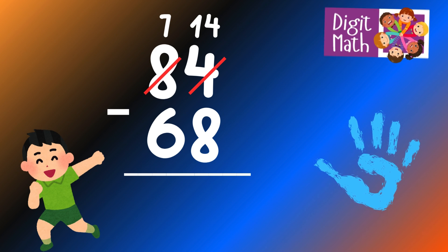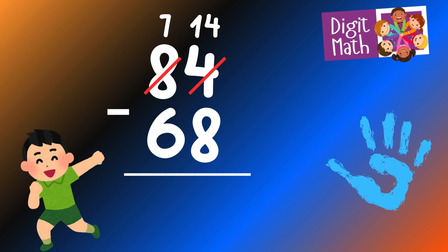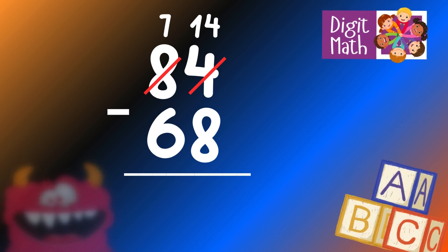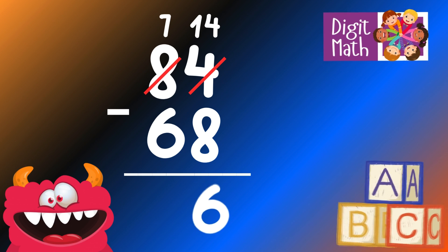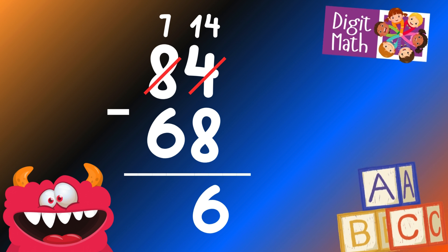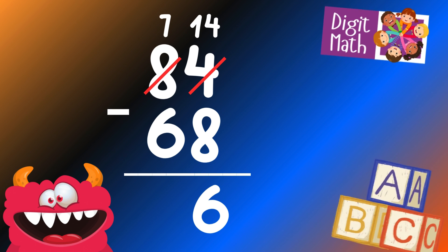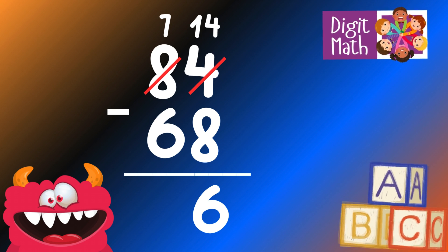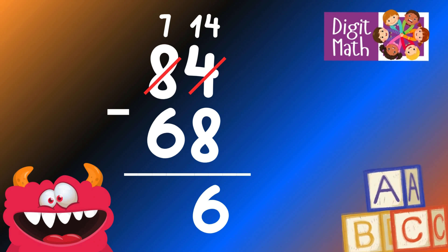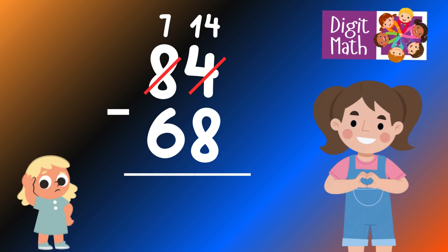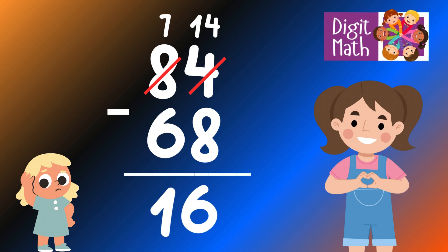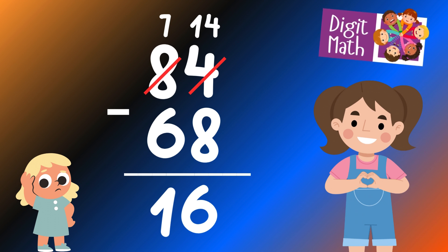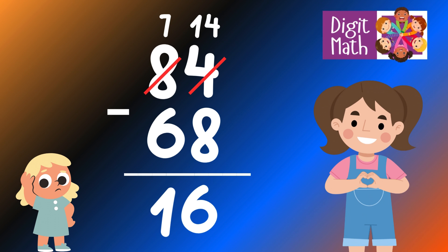Now we have 14 in the Units column. Subtract 8 from 14, which equals 6. In the Tens column, we now have 7. Subtract 6 from 7, which equals 1. So the final result is 84 minus 68 equals 16.